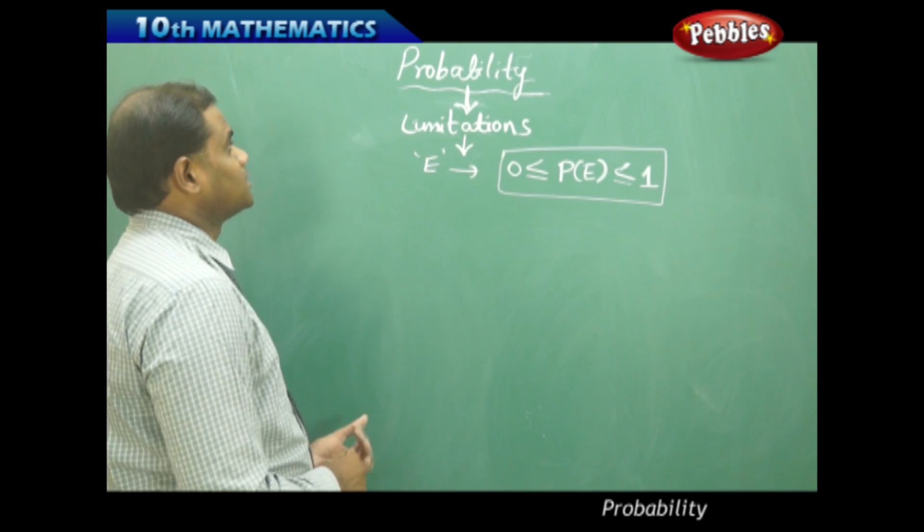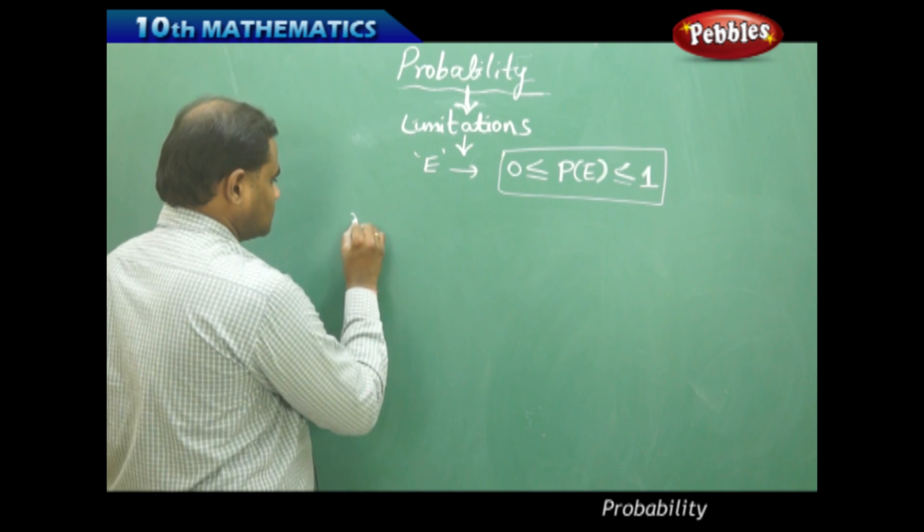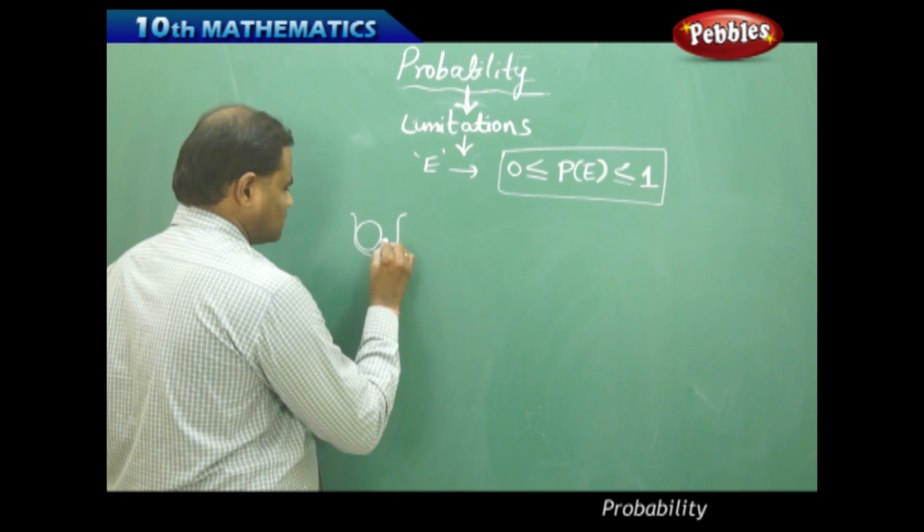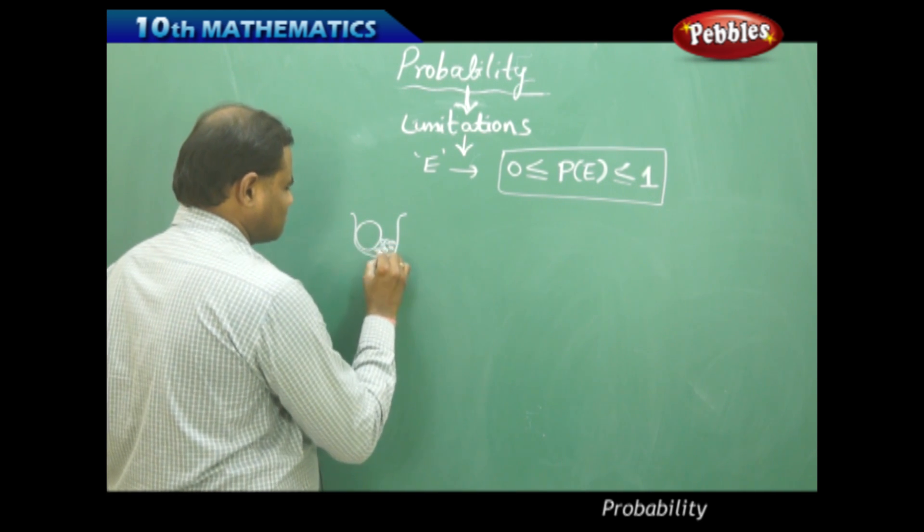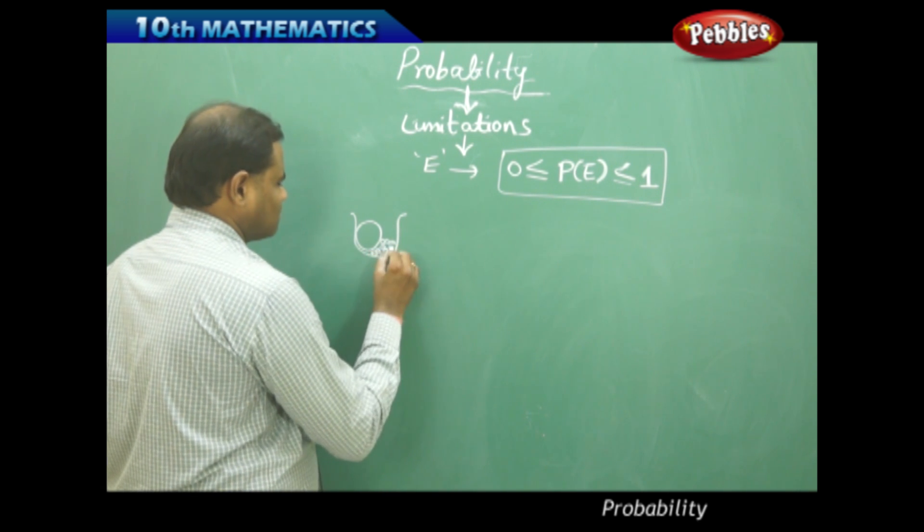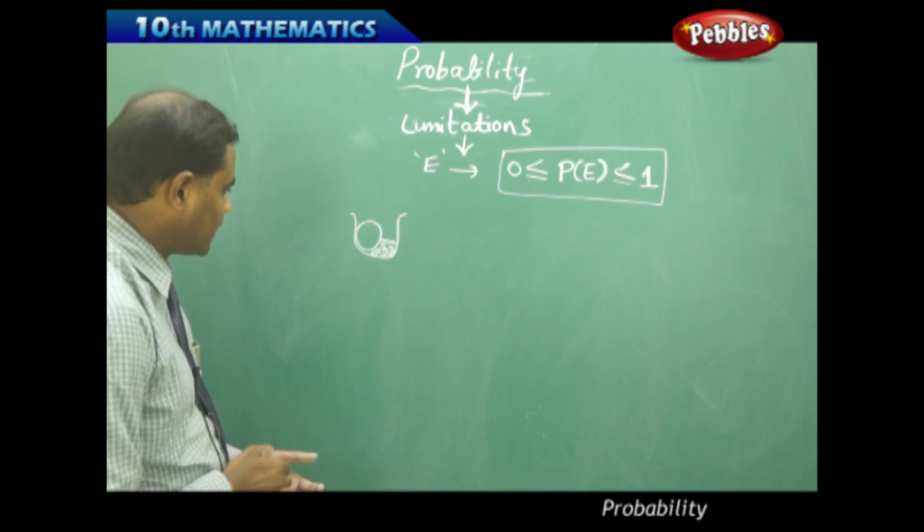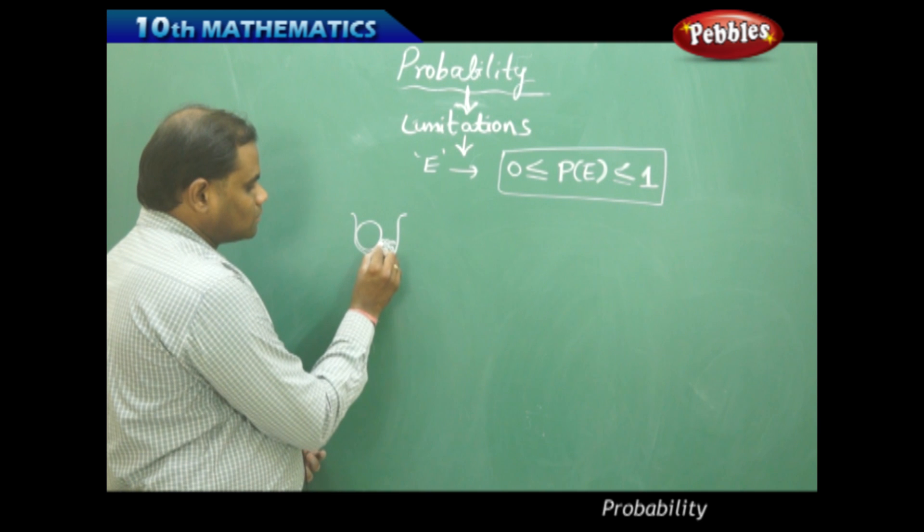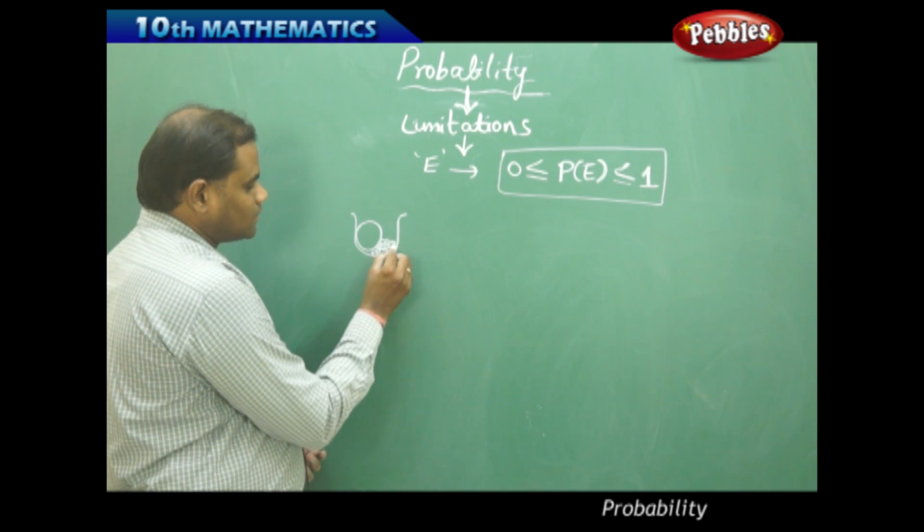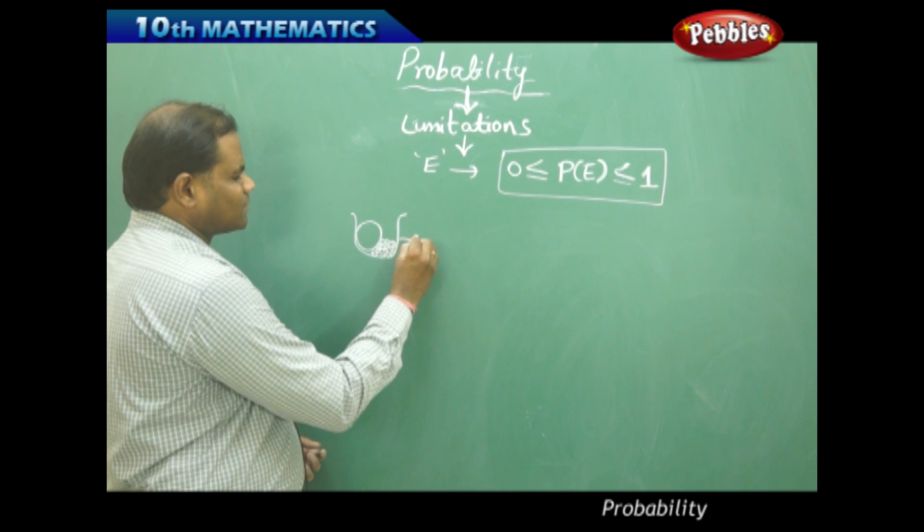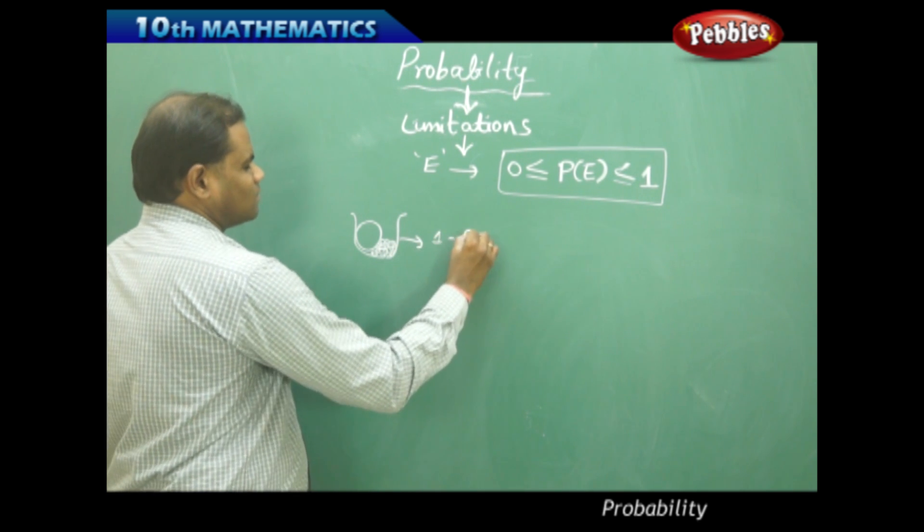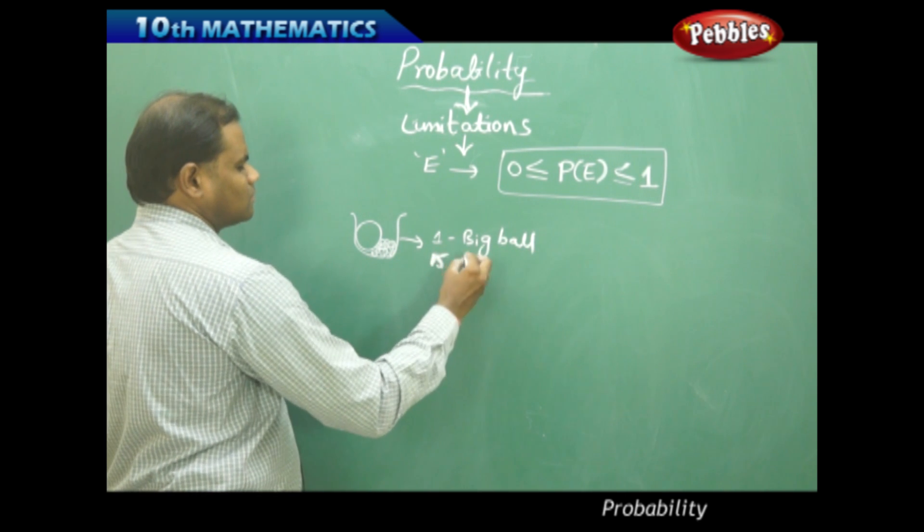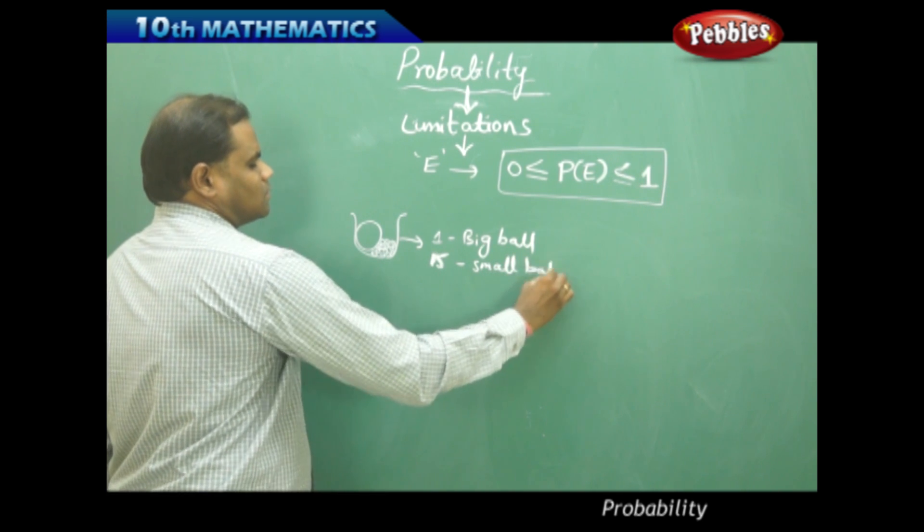But imagine I take a bag with different balls, where one is big and the small balls are numbered 1, 2, 3, 4, 5, 6, 7, 8, 9, 10, 11, 12, 13, 14, 15. So there are one big ball and 15 small balls.